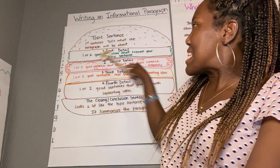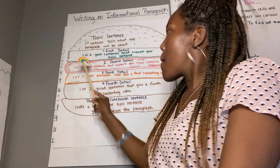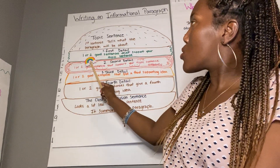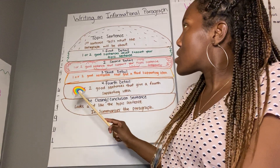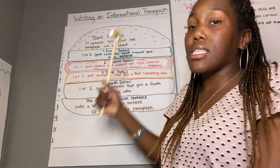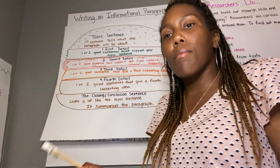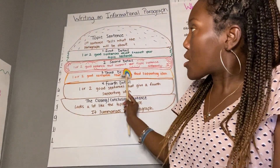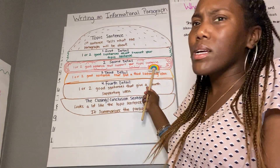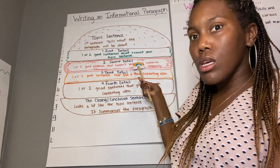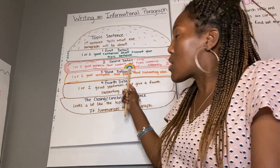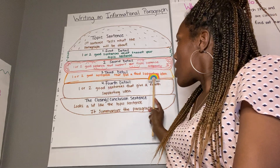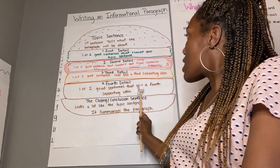The next part is the lettuce. We haven't gotten down to the meat of the sandwich yet, but we're on the lettuce — we're getting close. The lettuce of our sandwich is the first detail. The first detail is going to give us one or two good sentences that support our topic sentence. Our second detail is another one or two good sentences that support our topic sentence, but differently — we're not going to write the same details. We've learned a lot of ways that birds use their feathers to survive, so we're going to give more than one detail. Our third detail is one or two more good sentences that give a third supporting idea, and our fourth detail is one or two more good sentences to give a fourth supporting idea.